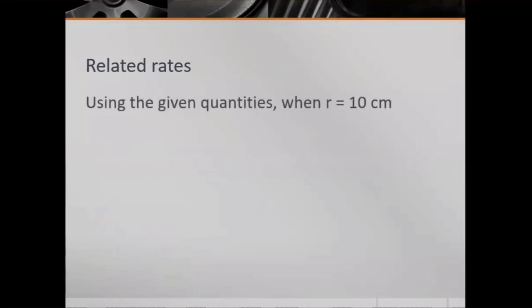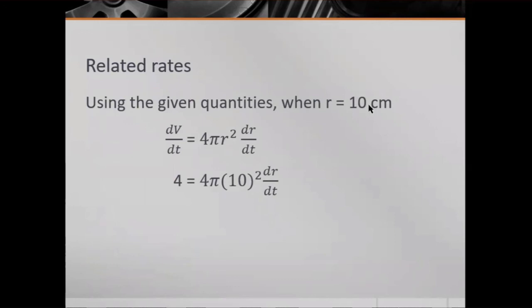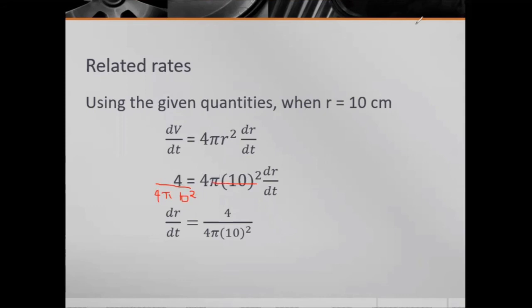Substituting: dV/dt = 4πr² · dr/dt. With dV/dt = 4 and r = 10: 4 = 4π(10²) · dr/dt. Solving for dr/dt: dr/dt = 4 / (4π · 100) = 1 / (100π) ≈ 0.00318.